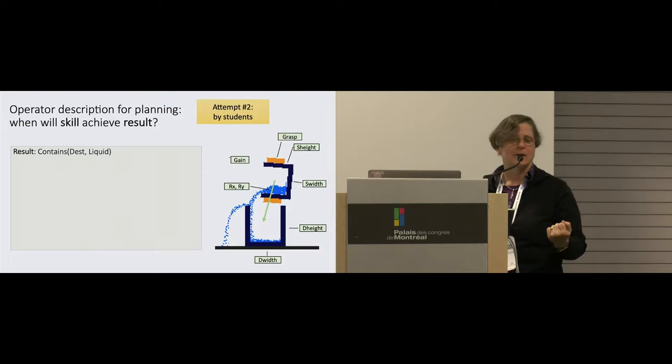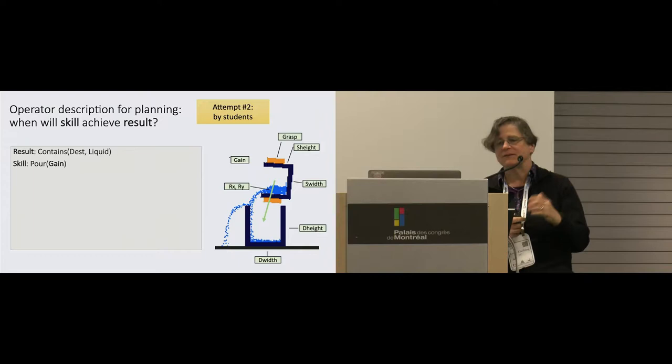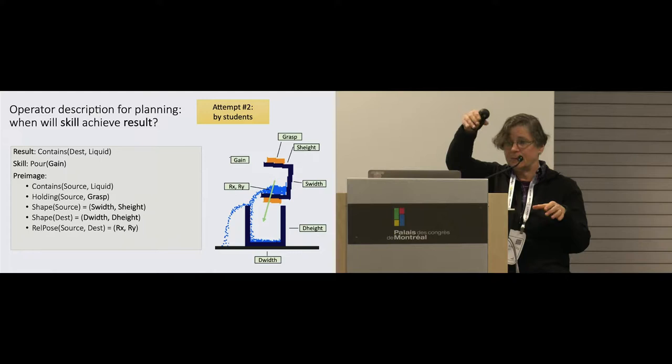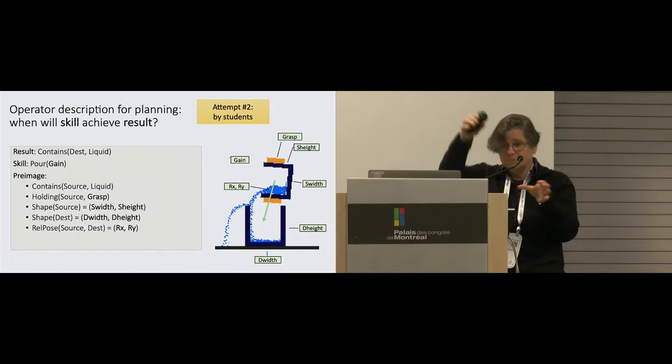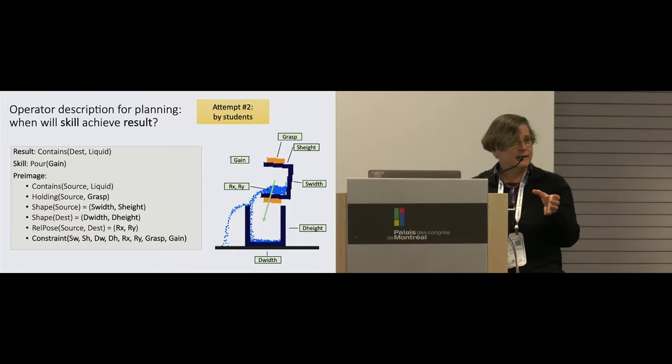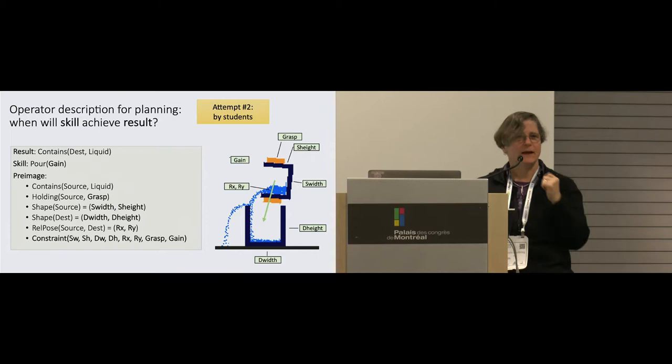They also just started with a motivating example that was more complicated. Now we've learned a simple primitive for our robot, which is pouring stuff from one vessel into another. Same basic story. I have this pouring skill. It has a parameter, which is the gain. I would like liquid to get from one cup into the other one. And again, a human at least figured out the structure of this operation. I think that this is going to depend on how I'm holding the cup I'm pouring from, the shape of the cup I'm pouring from, the shape of the cup I'm pouring into, and their relative pose.